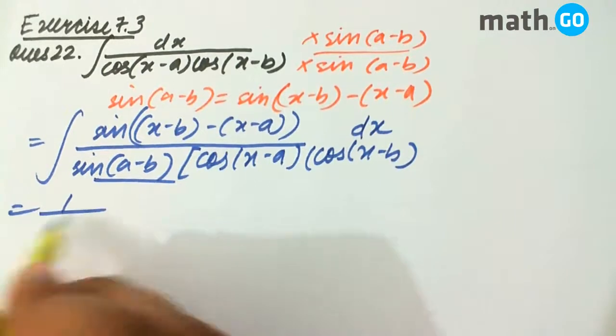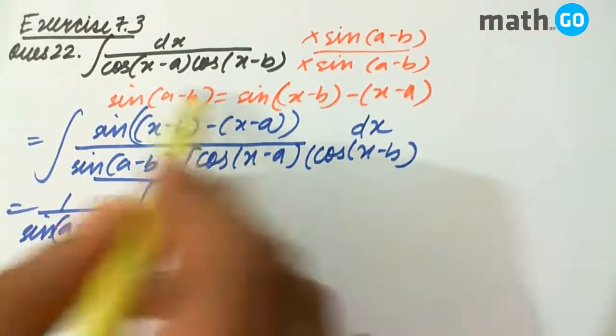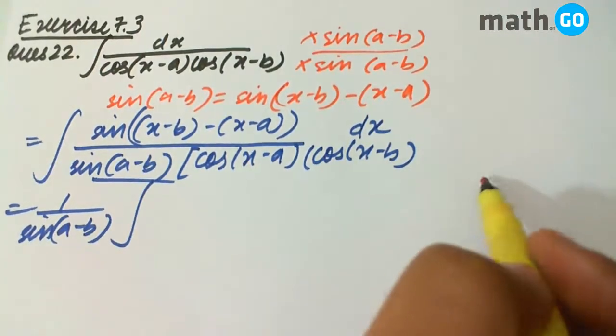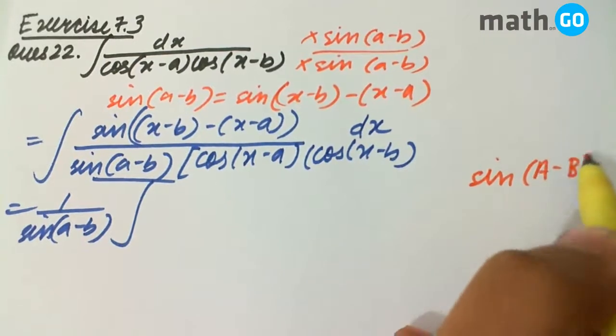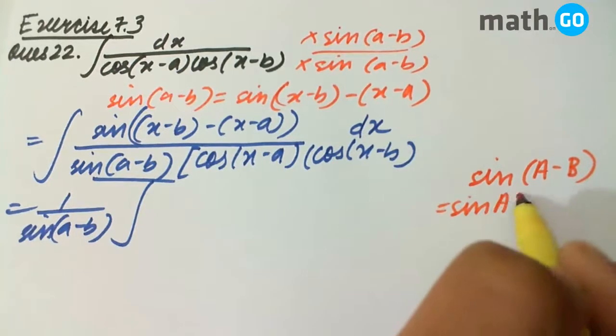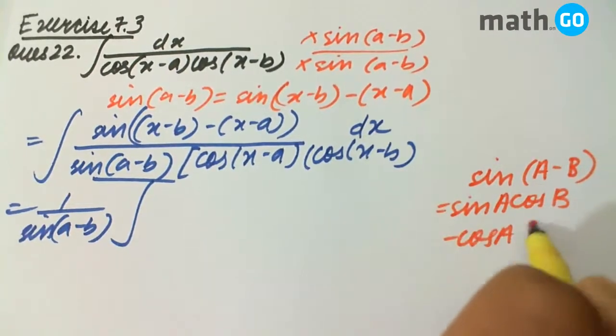Now we see this is a constant that can be taken out. And in this we have to apply the formula for sin(a-b), which we know as sin(a)cos(b) minus cos(a)sin(b).